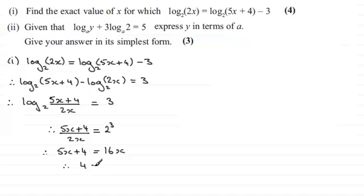4 = 11x, and then all I need to do is just divide both sides by 11. So therefore x = 4/11. It says find the exact value of x, so I'm just going to leave it then as x = 4/11.